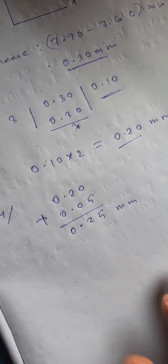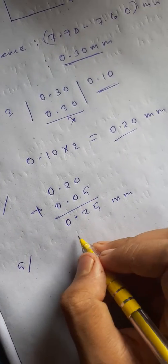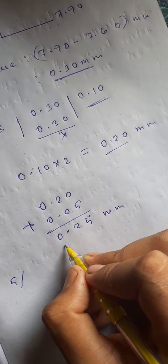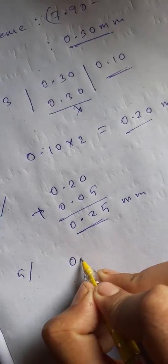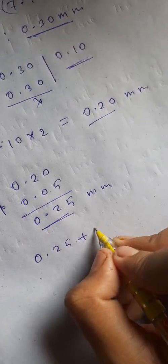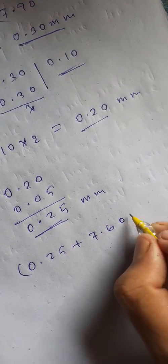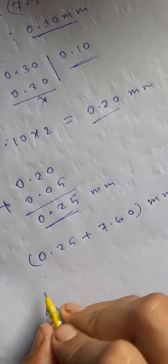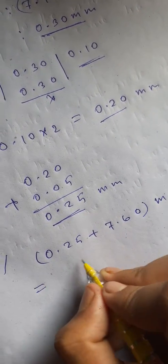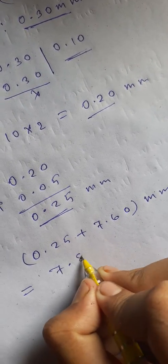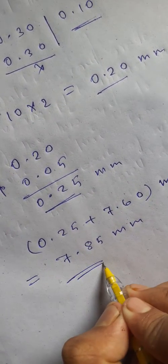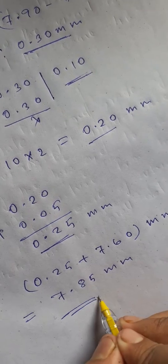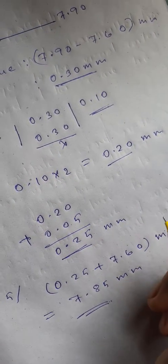The final step is to add this value with the smaller keratometry reading. So 0.25 plus 7.60 millimeter equals 7.85 millimeter. This value is the calculated base curve for RGB contact lens.